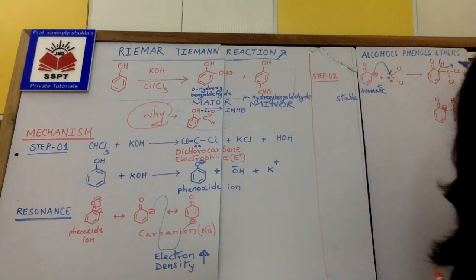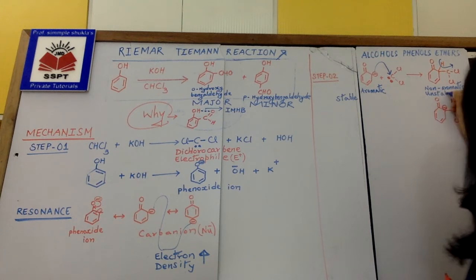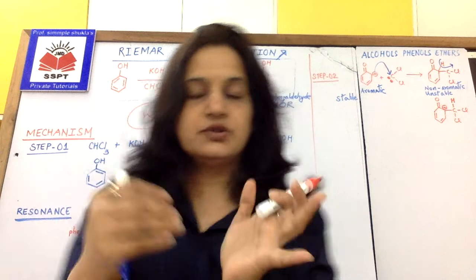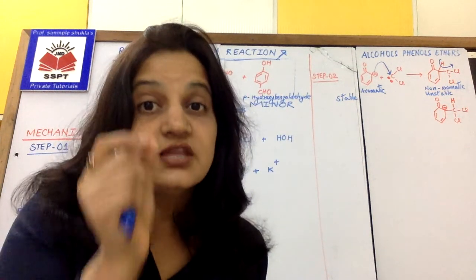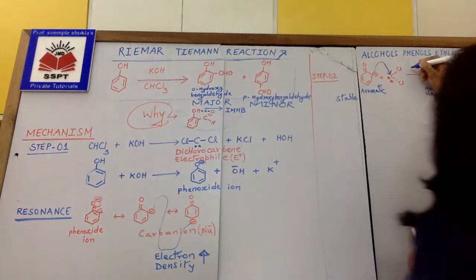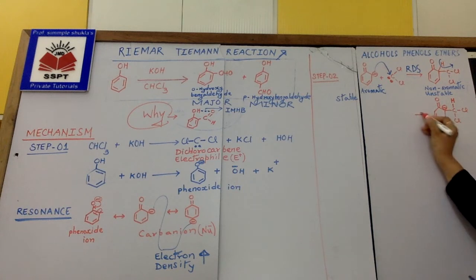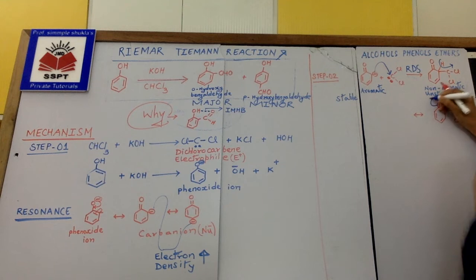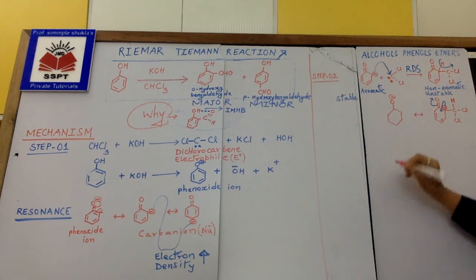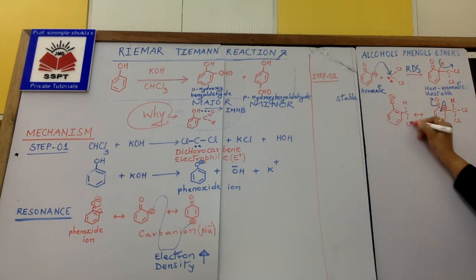Now this intermediate is not aromatic so obviously it is comparatively unstable. This is the slowest step and you all know the slowest step is the rate determining step. So this is the RDS of the reaction. This electron can come here and this can go back to the oxygen.